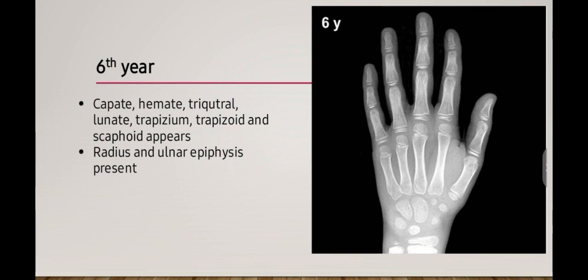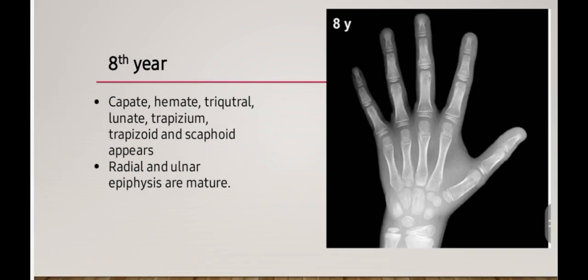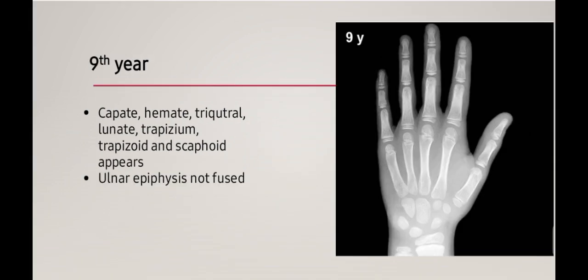At seven years of age, capitate, hamate, triquetral, lunate, trapezium, trapezoid, and scaphoid bones are present, and the radial and ulnar epiphyses are more mature. At eight years of life, the same carpal bones are present and the radial and ulnar epiphyses are further mature.